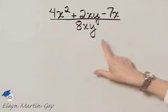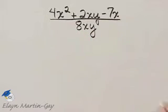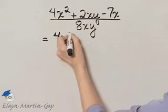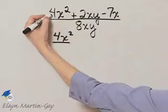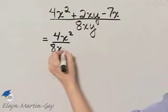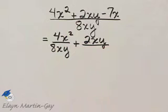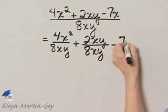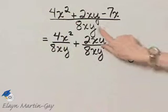Let's perform this division. Notice we are dividing by a monomial, or we're dividing by one term. So to divide, I will rewrite each term in the numerator over that monomial in the denominator. So the first term: 4x squared over 8xy, plus the next term, 2xy over 8xy, minus 7x over 8xy. Each term in the numerator, notice, I've written over that one term in the denominator.